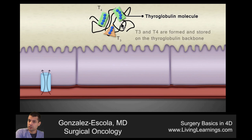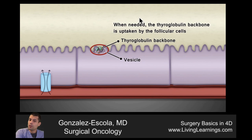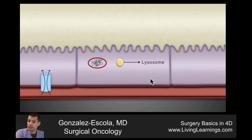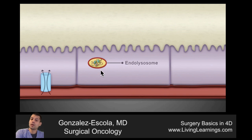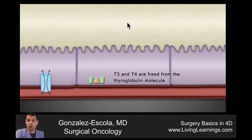These T3 and T4 molecules are still attached to the thyroglobulin molecule within the colloid or lumen. When needed, the thyroglobulin backbone is introduced into the follicular cell and lysosomes, which become endolysosomes, break down this molecule and free up the T3s and T4s. Other T1s and T2s that are also freed, because they are not physiologically active, go back to the colloid to join other thyroglobulin molecules and continue the synthesis process.